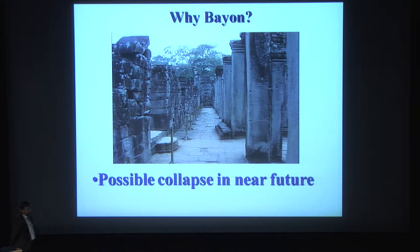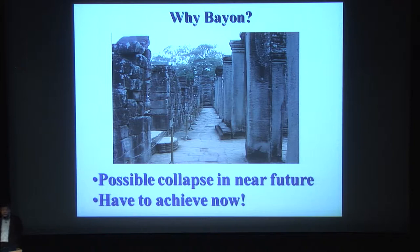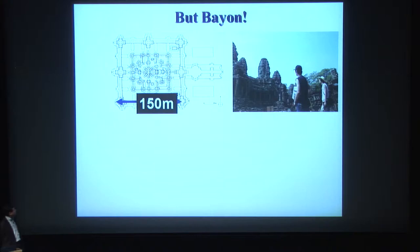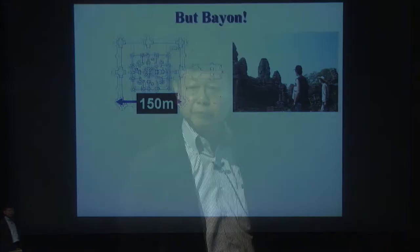Why are we working on this temple? Because the central tower is inclining and there is possible corruption in the near future, so it is a good idea to obtain data while it is still existing. The problem is this temple is a huge structure — 150 meters by 150 meters, 30 meters in height. Its size is huge and also complicated, and due to that there are many challenges.